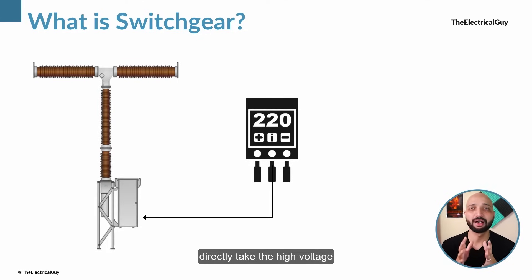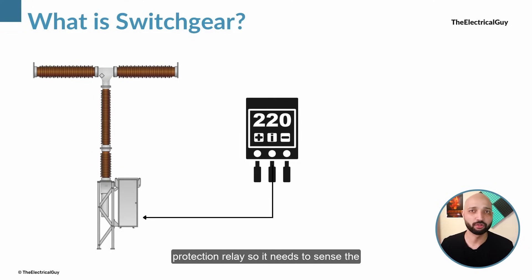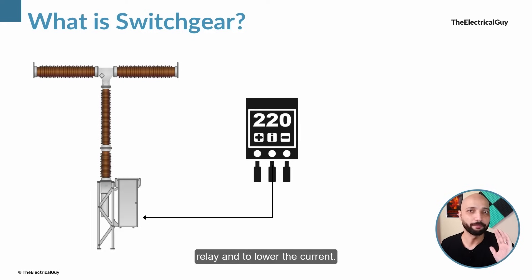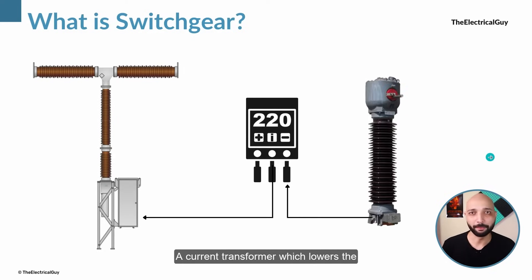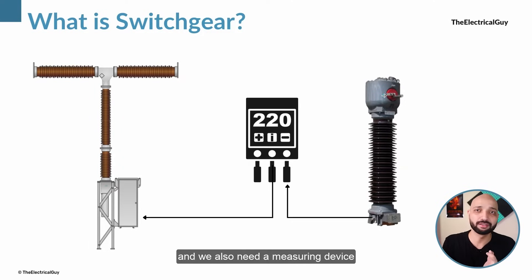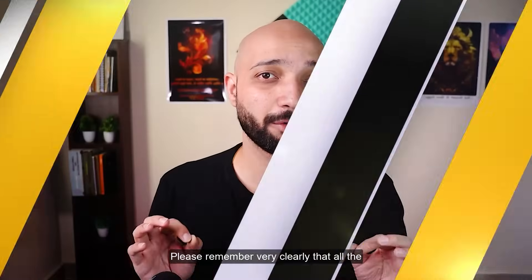The relay senses the abnormal condition and gives the command to the circuit breaker to open, or to trip. Now this relay is a small device and it cannot directly take the high voltage or high current as it is, so we need to lower the voltage or current to give input to the relay. For example, for an overcurrent protection relay we need to sense the current, but we cannot directly give the high current coming through the transmission line. To lower the current we use a current transformer, which lowers the high current from the transmission line to a value that can be given to the relay.